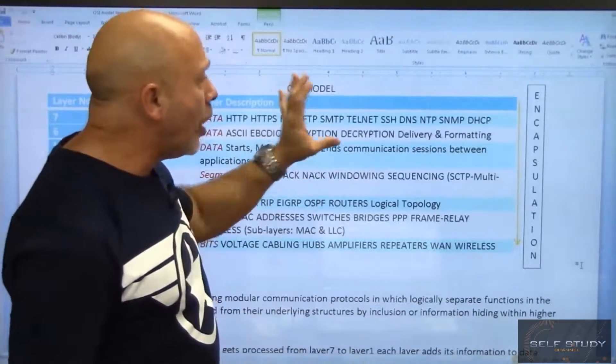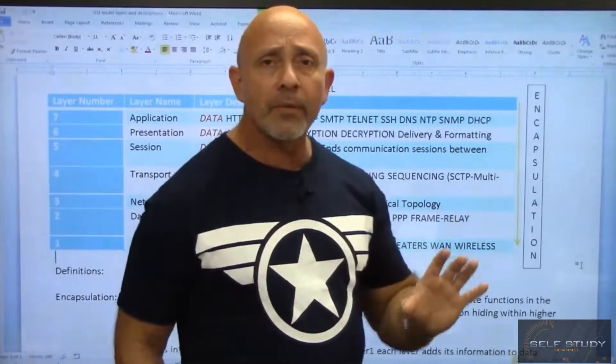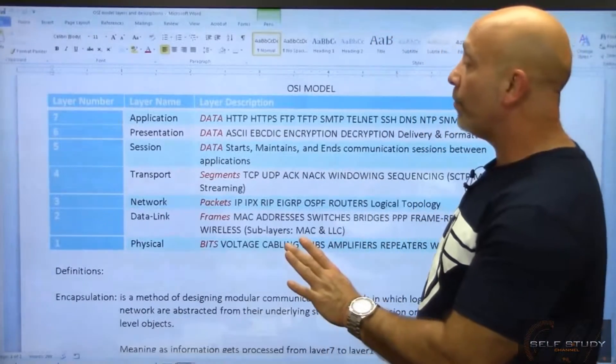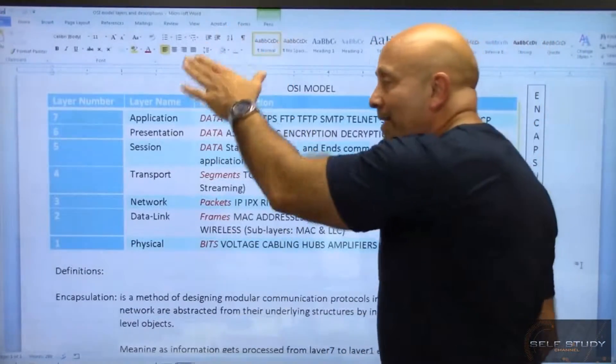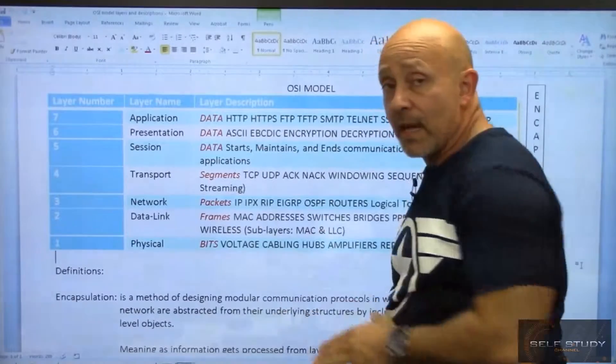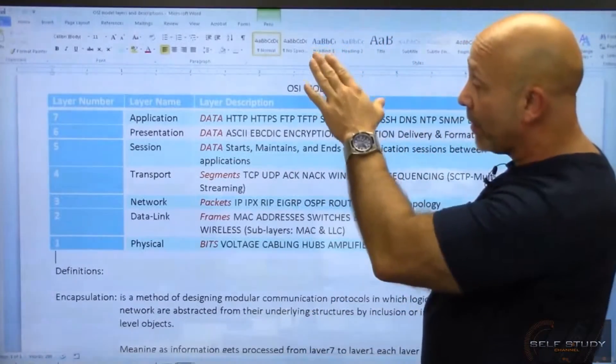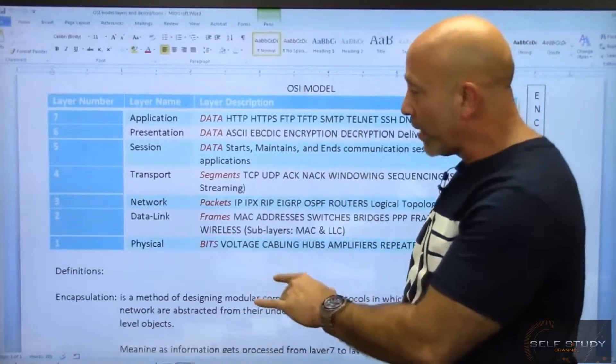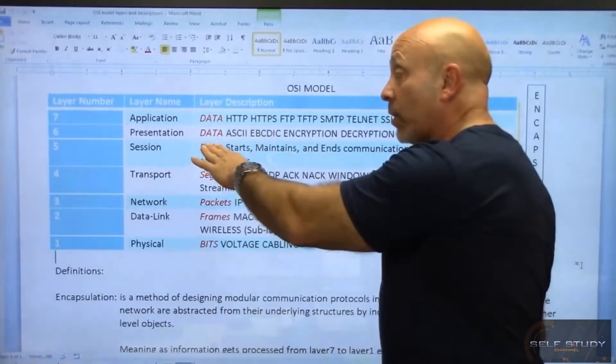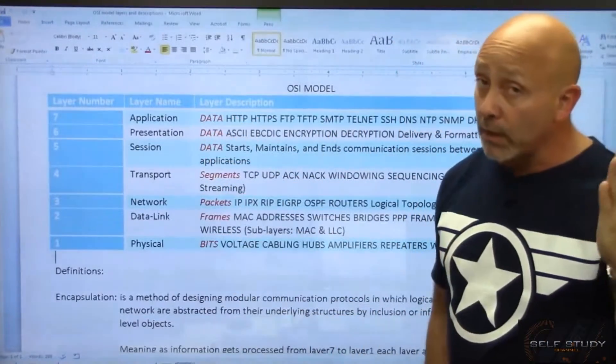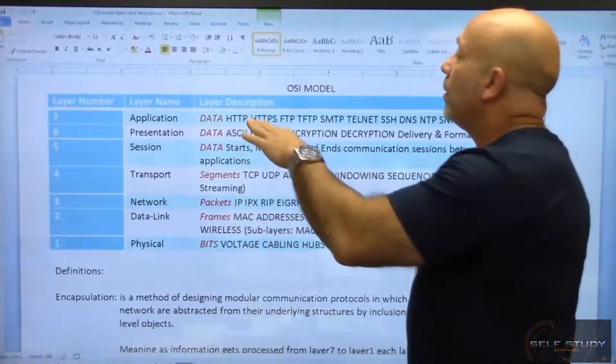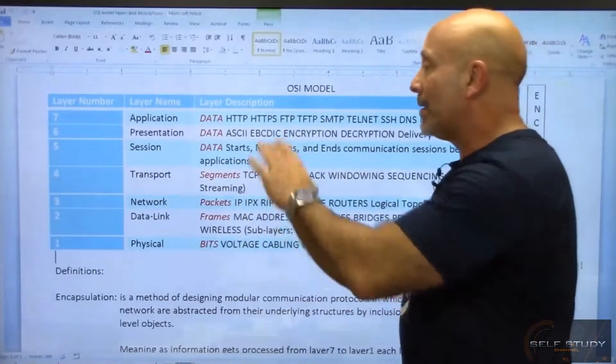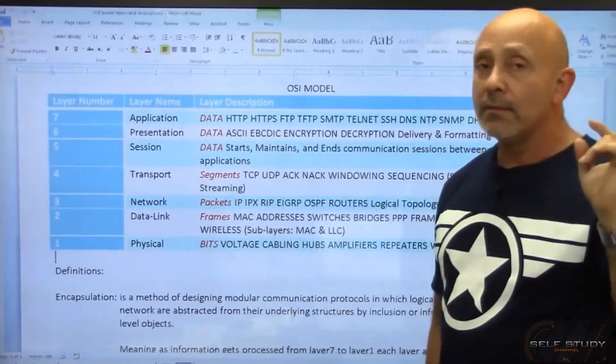So those are your upper three layers, your upper three layers, and that's it. That's all you need to know. And remember, we're going down now. We're going down the OSI. We're doing the, from the very top, and we're going to work our way down. And the first three layers, which are called the upper layers, the PDUs, the protocol data units, are data, data, data.